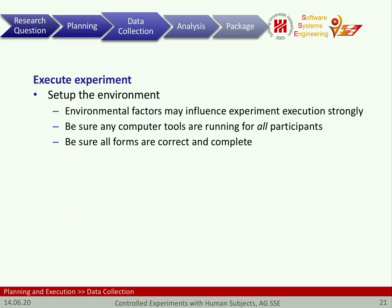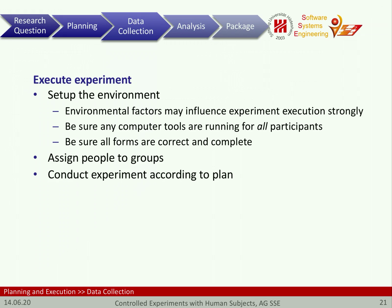Setting up the environment for an experiment is actually similar to setting up the environment for an exam. You want an environment where everybody can work well, in a repeatable and comparable fashion. Then we assign people to groups — if we use a blocked assignment, we gather data beforehand to determine blocking categories and distribute people accordingly. Then we conduct the experiment according to our plan based on experimental guidelines, and do some initial data validation to assess whether the data is meaningful, correct, and was appropriately part of the experiment.